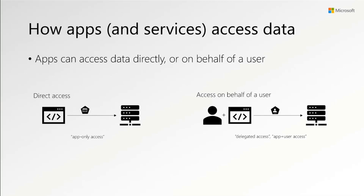We sometimes refer to it in our documentation or on Stack Overflow as app-only access. It's very simple. There's a client application on the left and a resource application or service on the right. The client application is accessing the resource service directly as itself — there's no user involved. It's saying, 'Hi, I'm the client, I'd like to take this action.' If the resource is Microsoft Graph, the client could be trying to create a user, reset a password, or download a file. That's direct access — pretty straightforward.